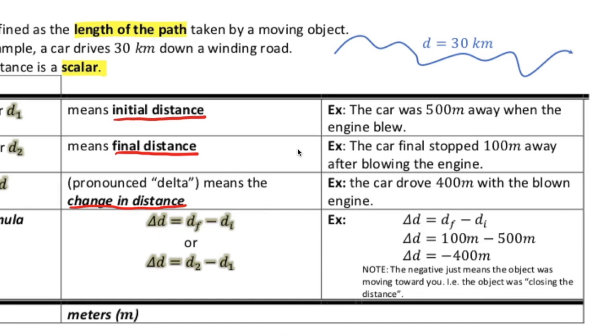That's the initial distance. The car finally stopped 100 meters away after blowing the engine. So what that means is this was the beginning of the event and this was the end of the event. So during that time, the car went from moving to not moving.